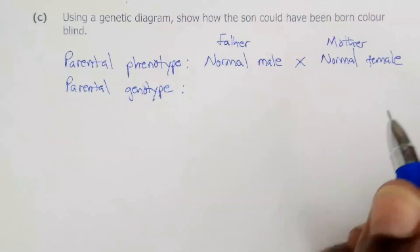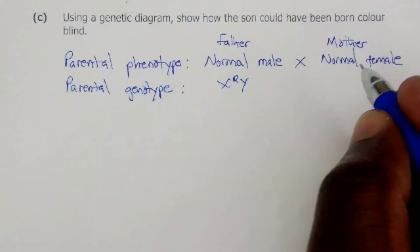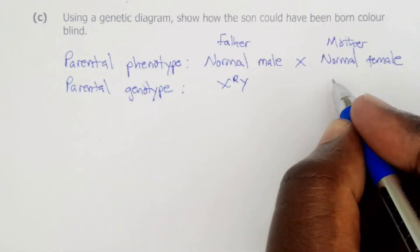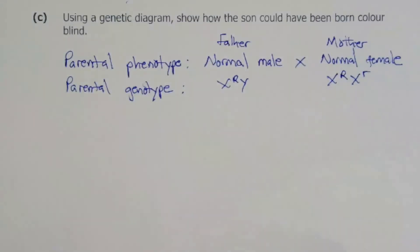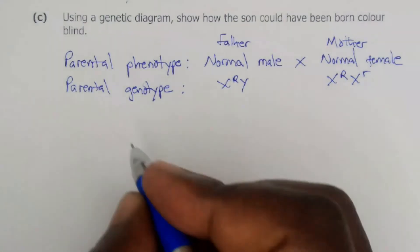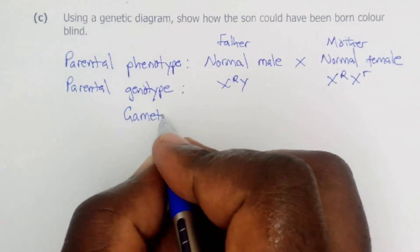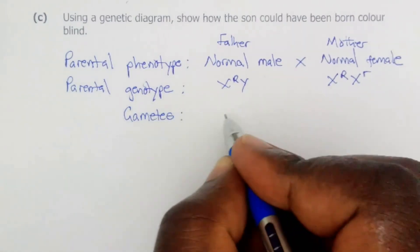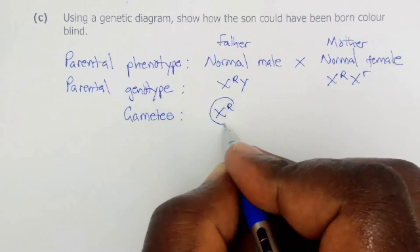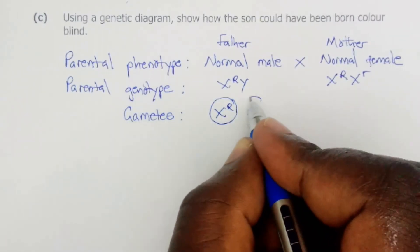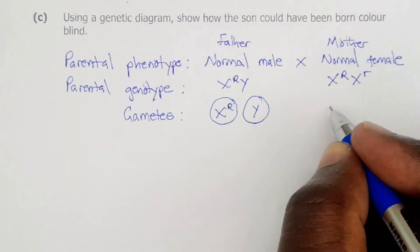The second step is to write the parental genotype. For the normal father the genotype is X capital R Y, and for the carrier mother the genotype is X capital R X small r. The third step is to write the possible gametes for both the father and the mother.